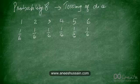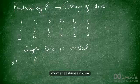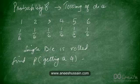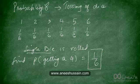So if you get a simple question which says that a single die is rolled and asks what is the probability of getting a 4, for example, you'll simply say the answer is 1 out of 6, and this is going to be the same for any of these faces. The answer would always be 1 out of 6. So a single die is actually pretty easy.